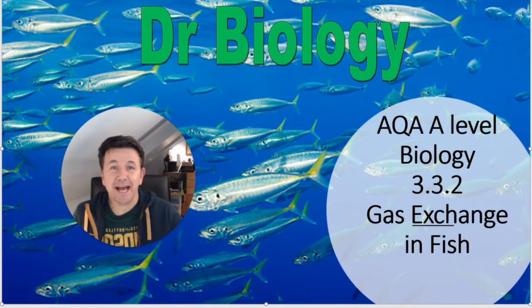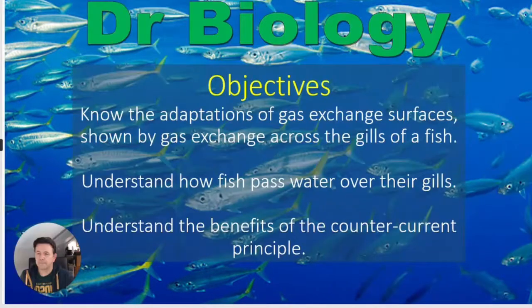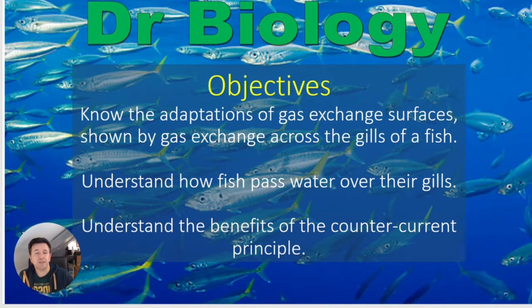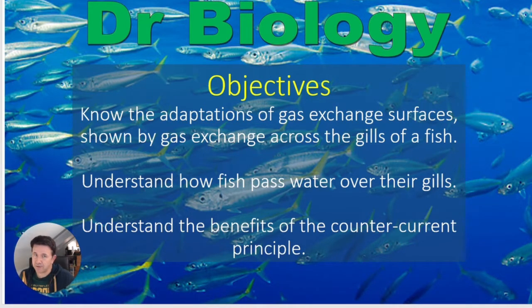Hi, Dr. Biology here. This video covers AQA A-level biology gas exchange in fish. The main objectives are to know the adaptations of gas exchange surfaces shown by gas exchange across the gills of a fish, understand how fish pass water over their gills (related to the OCR specification), and understand the benefits of the counter current principle.